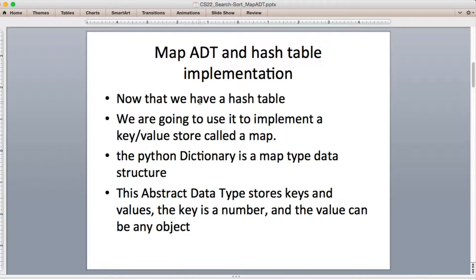Since we do have a hash table, we're going to use it to implement a key value store called a map. And the Python dictionary is exactly the type of thing we're looking for. A Python dictionary stores a key and then a piece of data that's related to that key, and then you can look it up by the key.